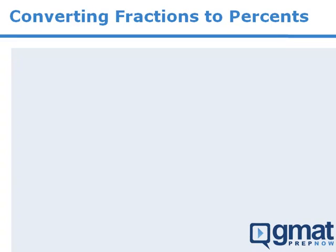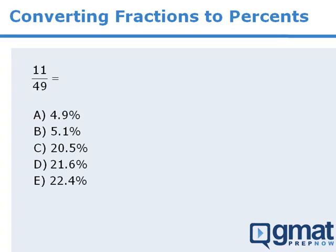To set this up, let's say we're solving a GMAT math question and we get an answer of 11 over 49. But the answer choices are given as percents. How quickly can you determine which of these is the best approximation of 11/49ths?